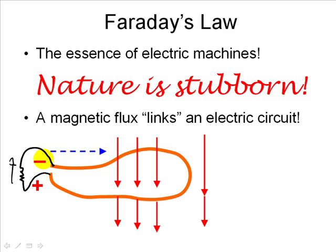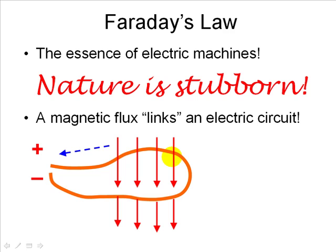Now if we do the opposite — if we encounter the situation and move external lines of flux into the coil, we are increasing the flux, and Nature again will react and say, 'You are not going to change my flux.' It will create a current in the opposite direction that reduces the flux inside the coil and increases it outside, reversing the polarity of the induced voltage.